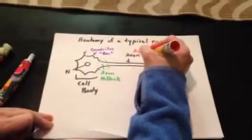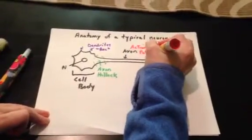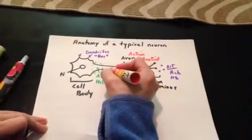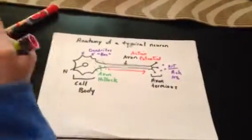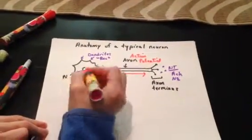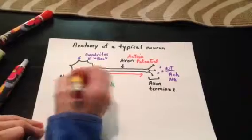When the action potential is generated, it will be generated in this direction. Information flow across this neuron begins here at the dendrites where they receive the stimulus or neurotransmitter.